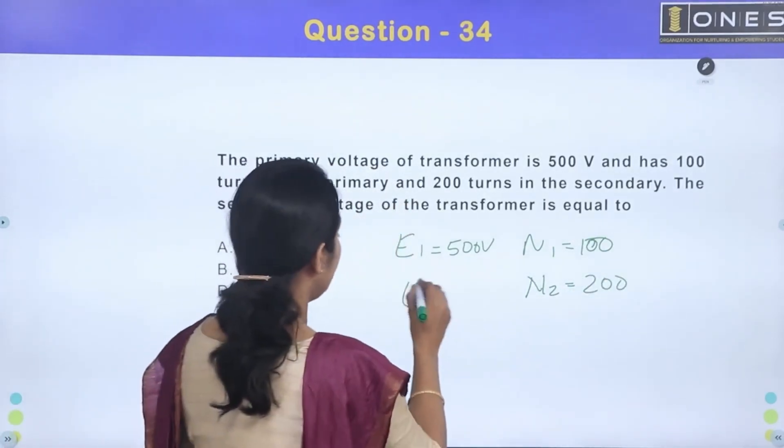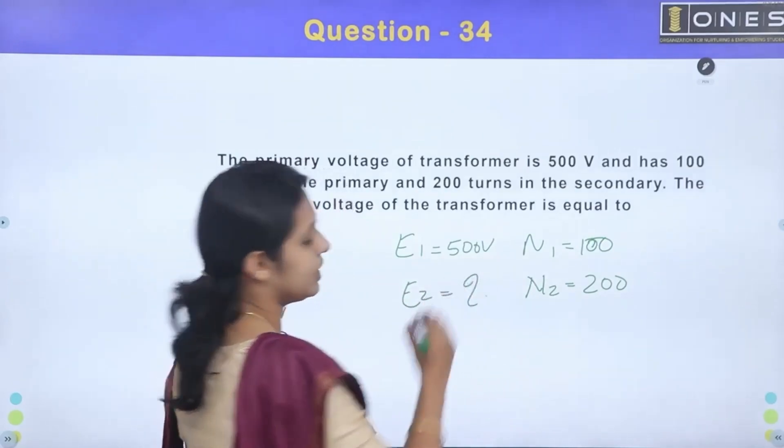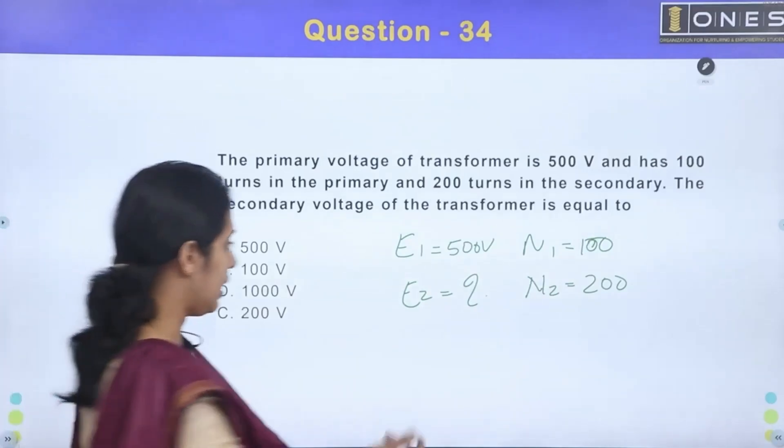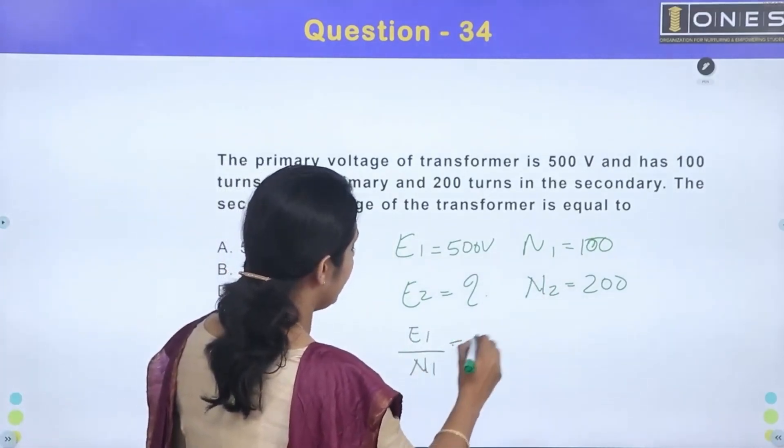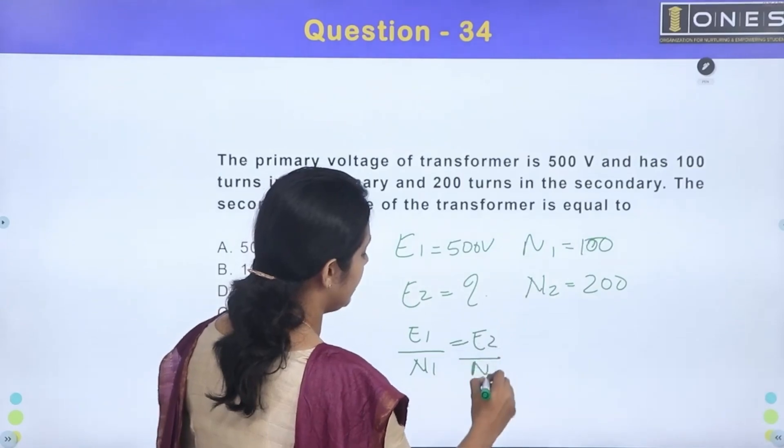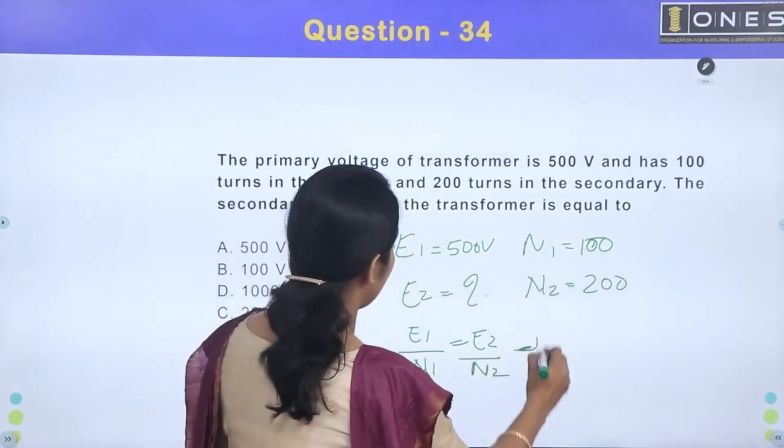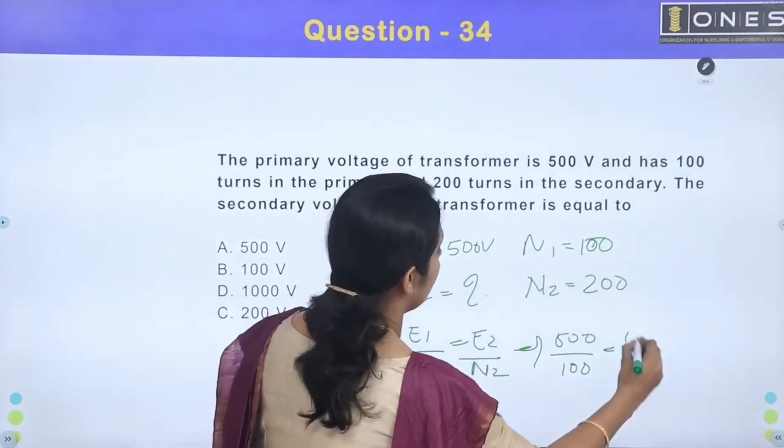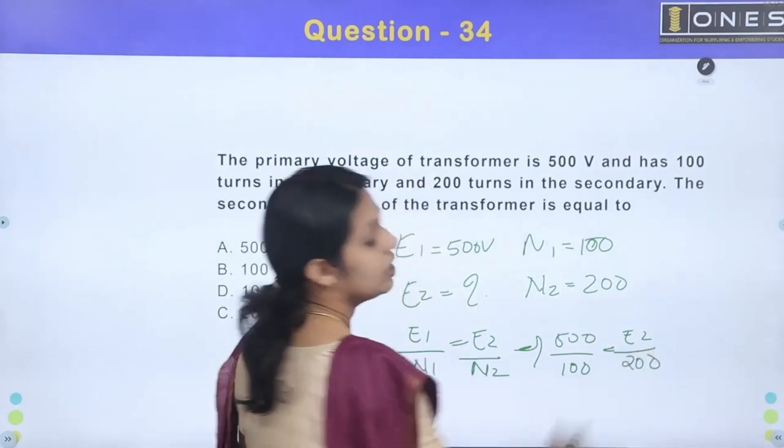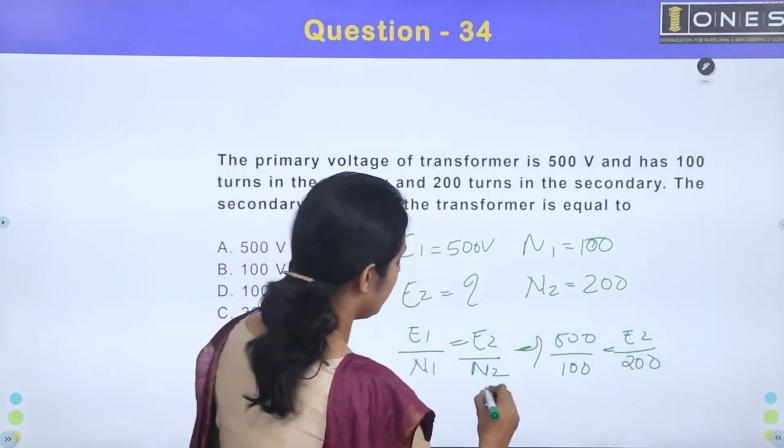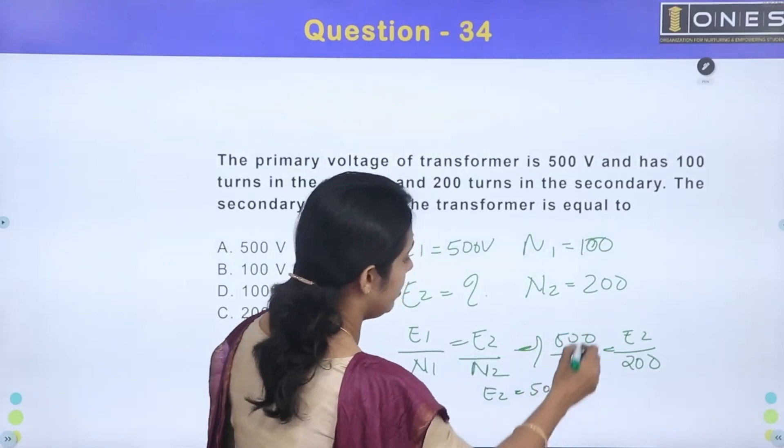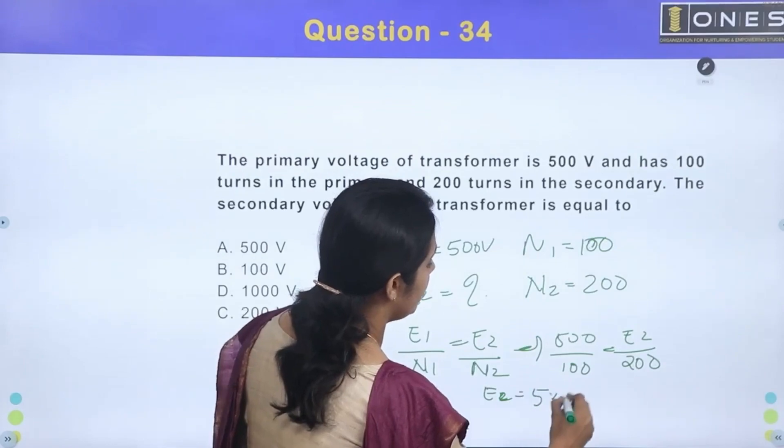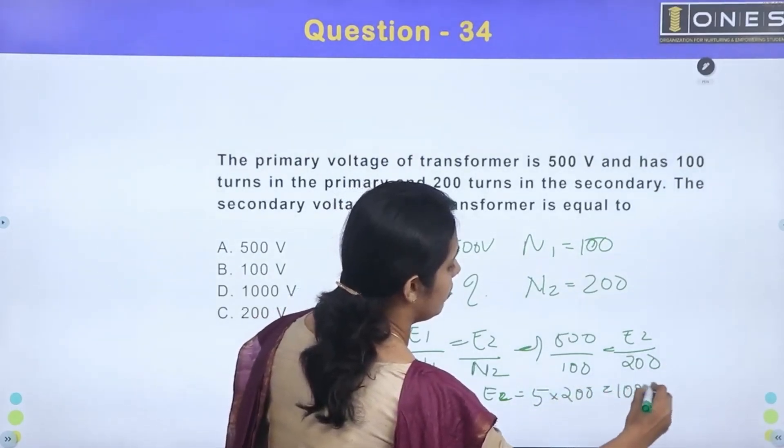So, we will see that E2 is secondary induced voltage value. We will see that it is constant. So E1 divided by N1 is equal to E2 divided by N2. So E2 is equal to E1 divided by N1 times N2. So E2 is equal to 5 into 200.